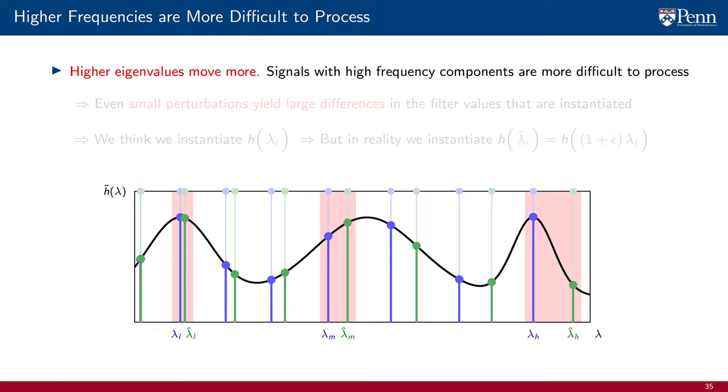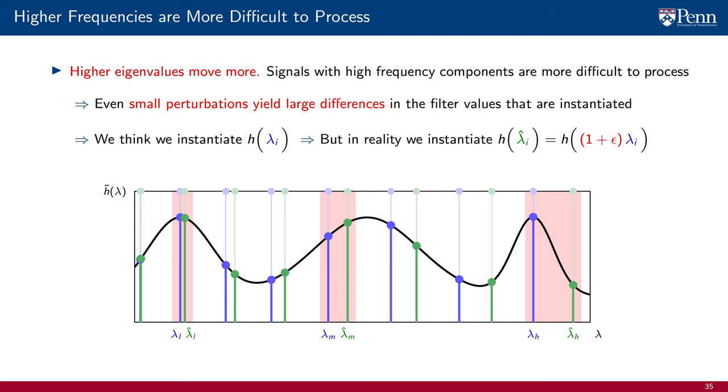Thus, signals with high frequency components are more difficult to process with a graph filter. This is inherent. There is nothing we can do to mitigate this problem, except of course to use something other than a graph filter. The source of the complication is that even small perturbations of the shift operator yield large differences in the values of the filter's frequency response that are instantiated. We think we are instantiating h of lambda_i, but in reality we are instantiating h of lambda_i_hat. We are instantiating the frequency response at a dilated eigenvalue, and the difference between these two eigenvalues and their corresponding responses can be quite a lot for a large frequency.